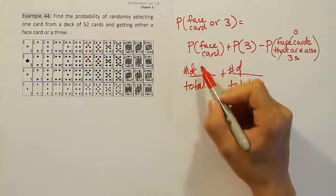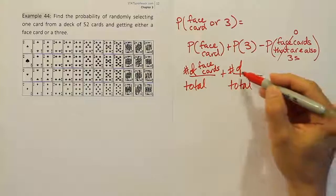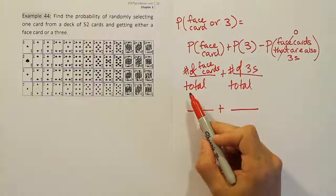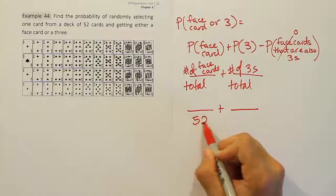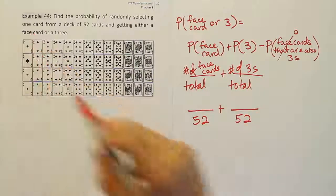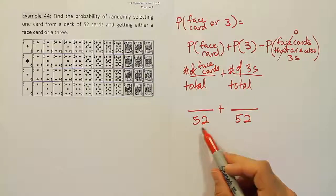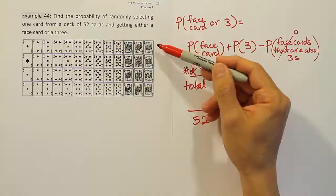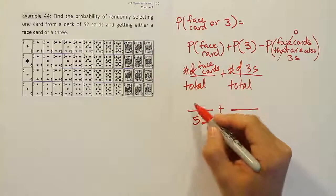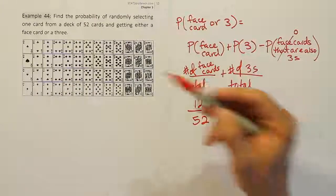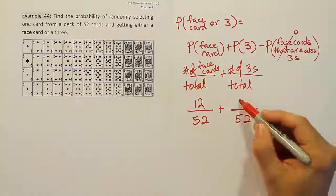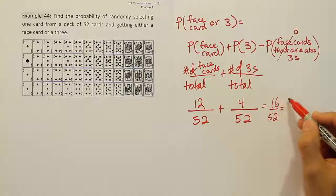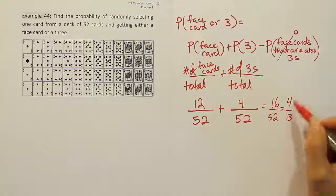The numerator of the first fraction is the number of face cards, and the second is the number of threes, each over the total. There are 52 total cards, and in the addition rule when you're only taking one item, you can keep the denominator the same throughout — so both denominators are 52. For face cards, we can see there's three here, three here, three here, three here — so altogether that's 3, 6, 9, 12 face cards. For threes, we count 1, 2, 3, 4 cards. So we get 12 over 52 plus 4 over 52, giving us 16 over 52.